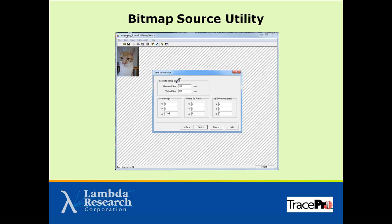The bitmap source utility lets you load a bitmap image and define your scene information — the image size in millimeters, its location relative to the camera, the imaging system entrance aperture, and aperture radius. Clicking OK generates a file source based on this information. These file sources are reusable across any TracePro model, so you can create a series of bitmap images and test them in different imaging systems or models.